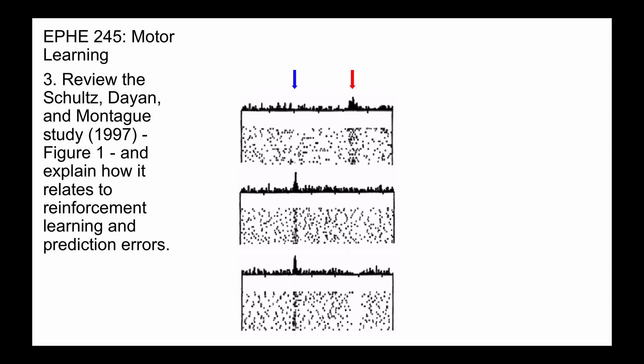And this can be explained in terms of reinforcement learning. In the first stage of learning, or the top panel, the reward is unexpected, so there's a prediction error. Outcome is greater than expectation.